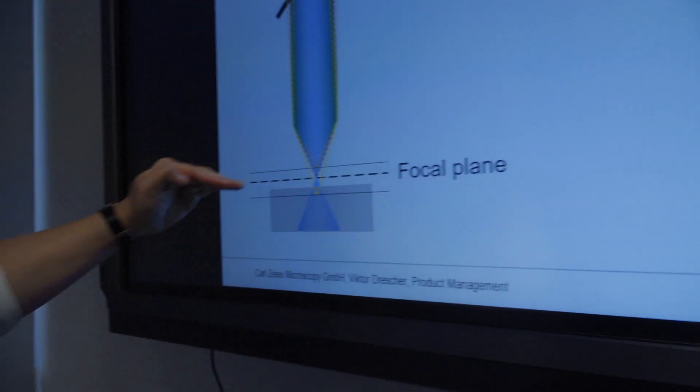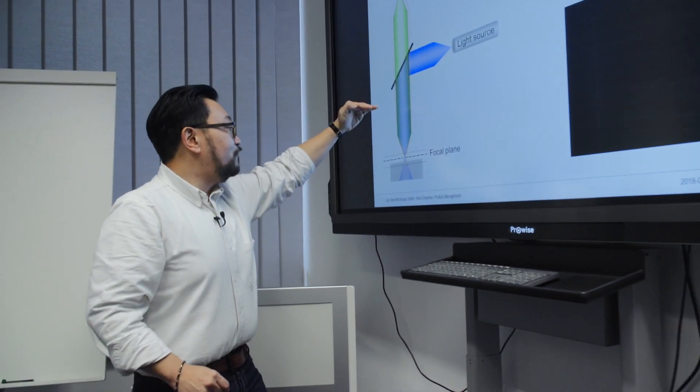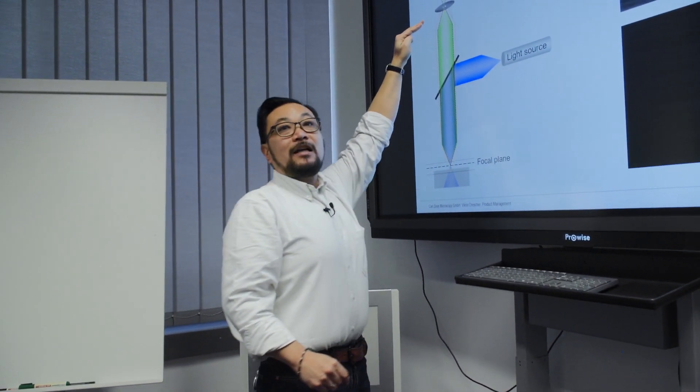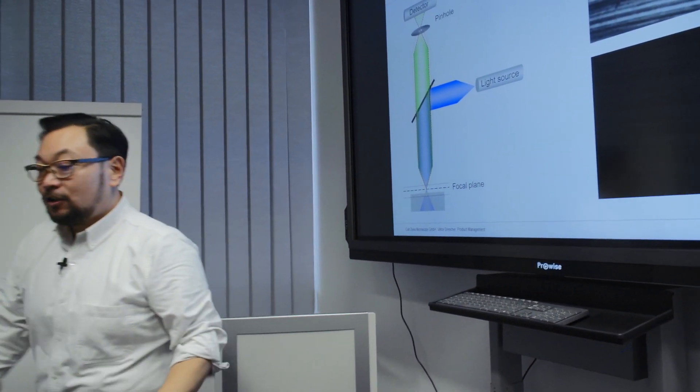Basically what that pinhole does is blocks the light except the very specific light that is in focus or in focal plane lighting. What will happen then is the light that is out of focus either beneath or above the focal plane will get blocked out and only the light that is from the focal plane will hit the detector.